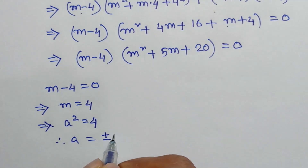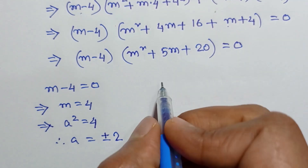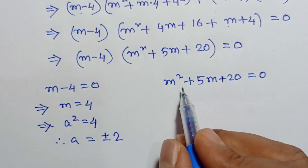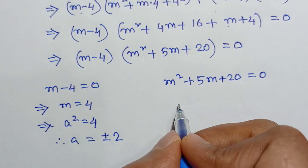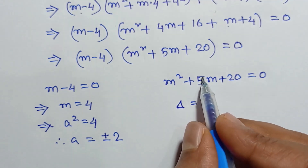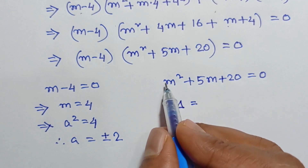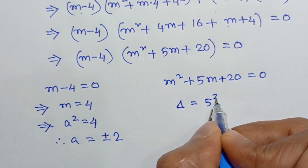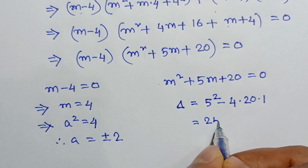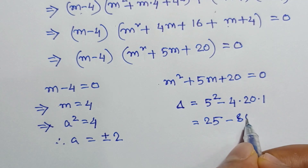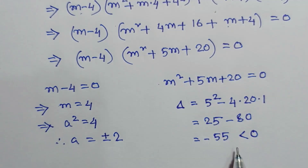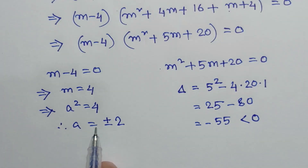For the other factor, m² + 5m + 20 = 0, this is a quadratic. The discriminant is Δ = b² − 4ac, where b = 5, c = 20, and a = 1 (coefficient of m²). So Δ = 5² − 4(1)(20) = 25 − 80 = −55, which is less than 0. Therefore there is no real solution from this factor, and the only real solution is a = ±2.